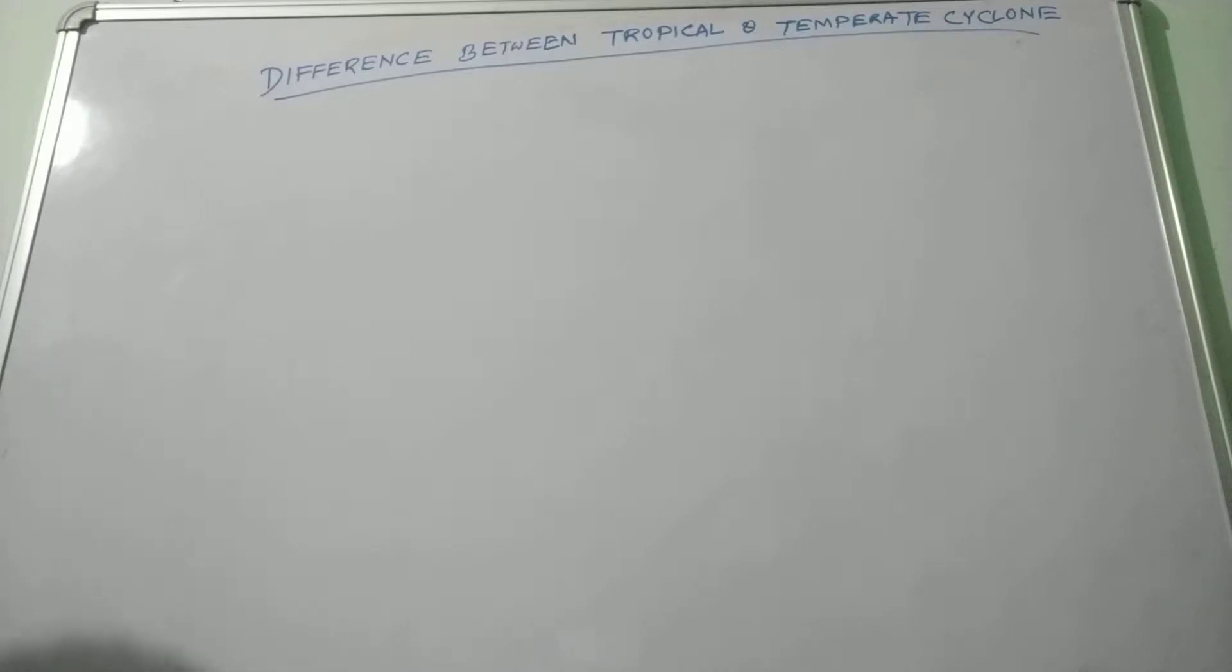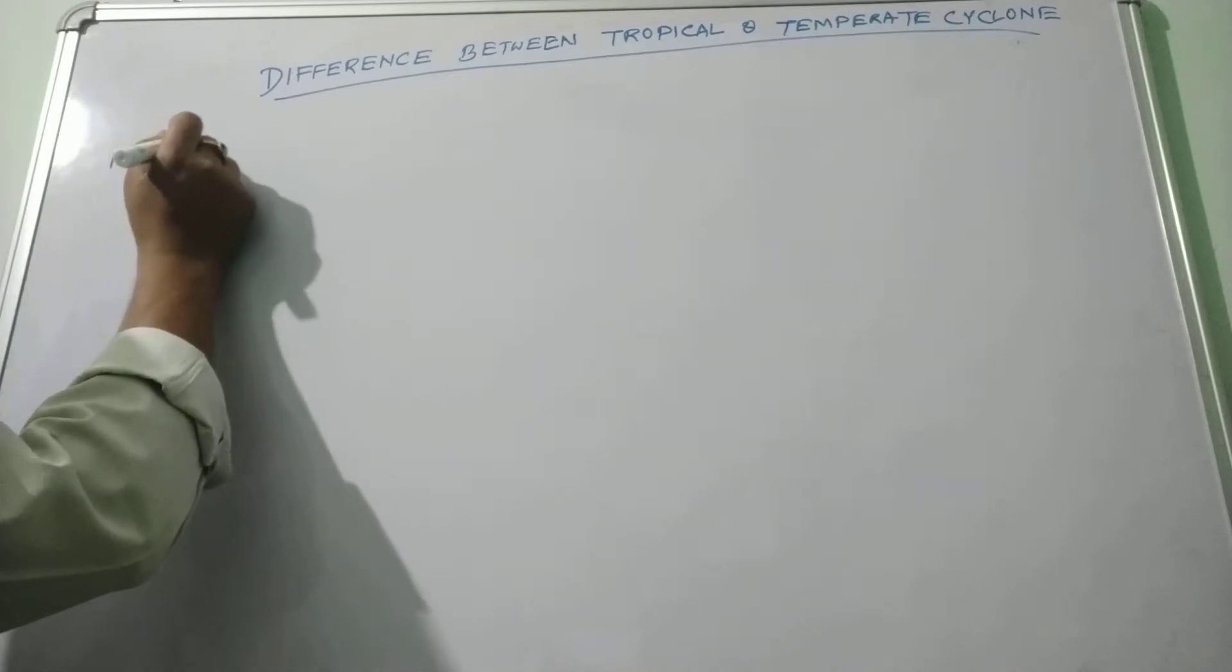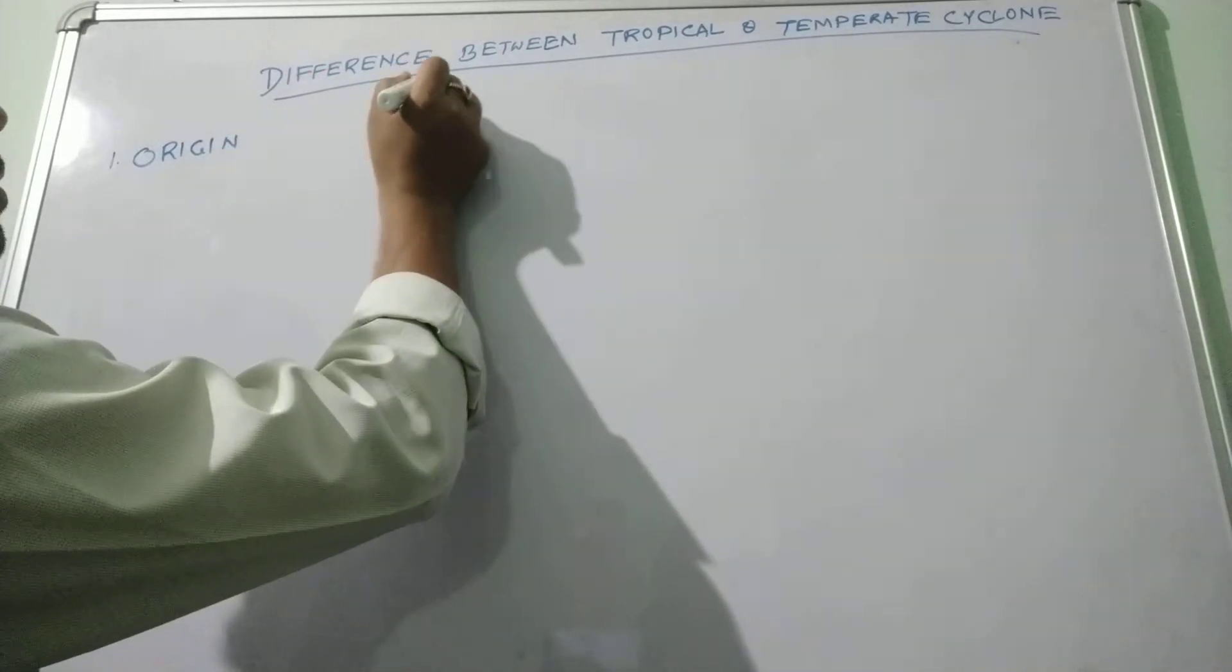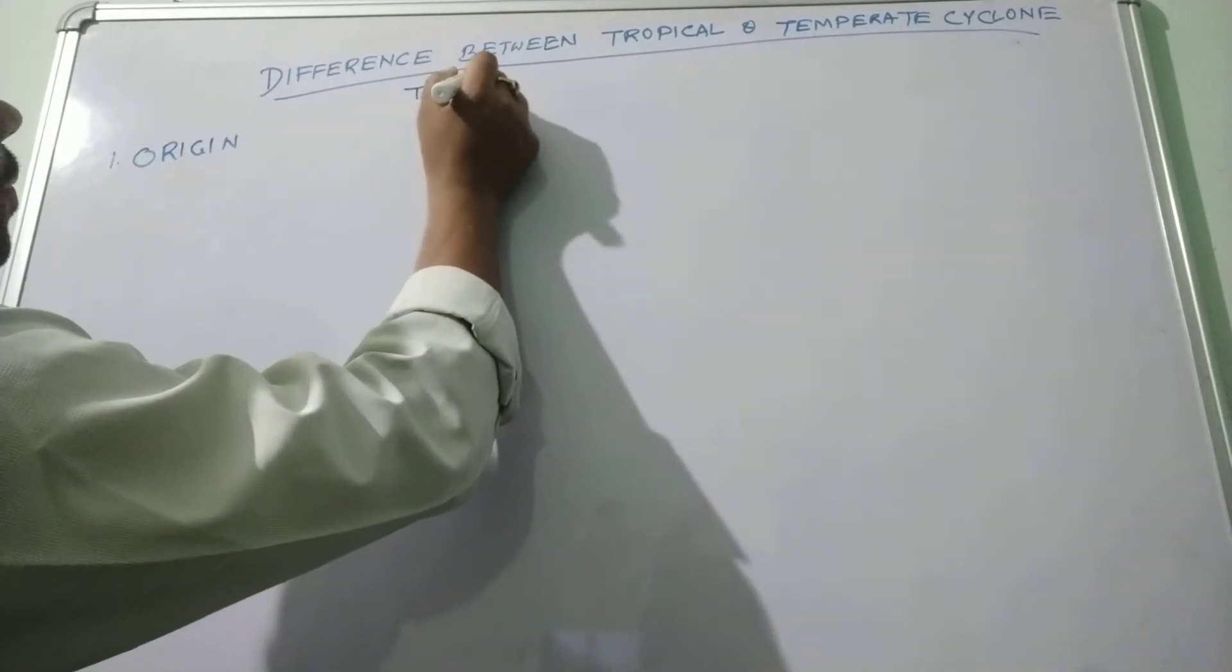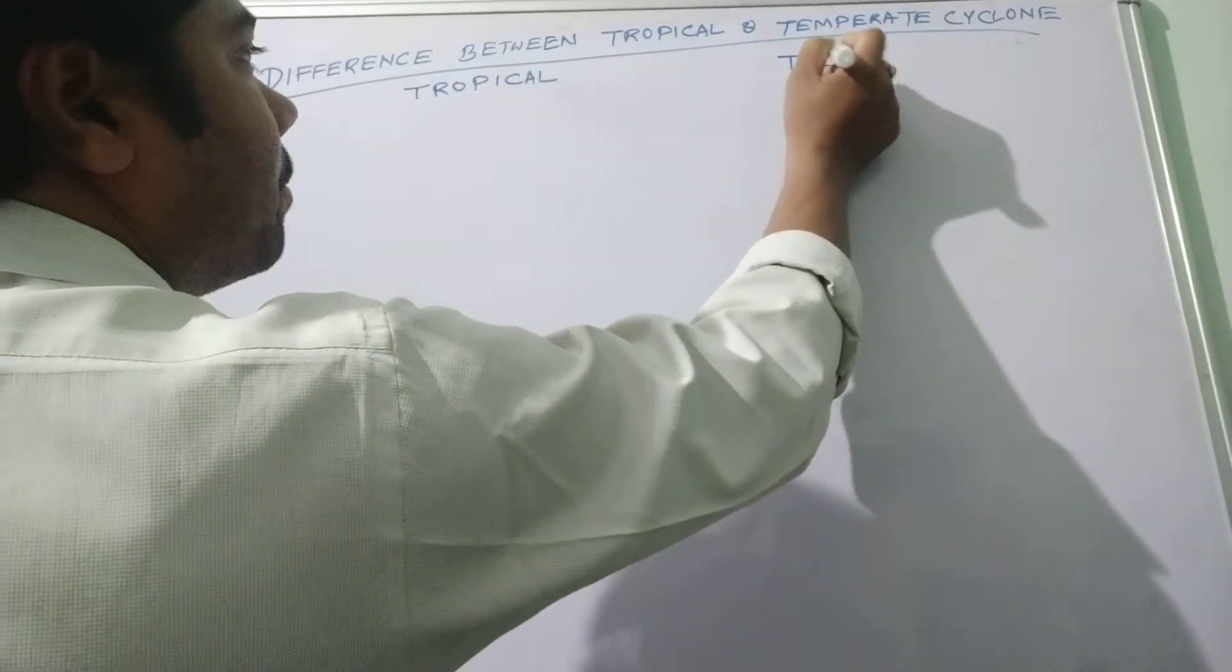Today I am going to discuss the differences between the tropical and temperate cyclone. First we are going to talk about the characteristics one by one and how they vary for the tropical cyclone as well as for the temperate cyclone. This is the tropical and this one is temperate.